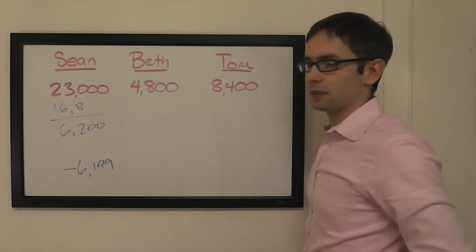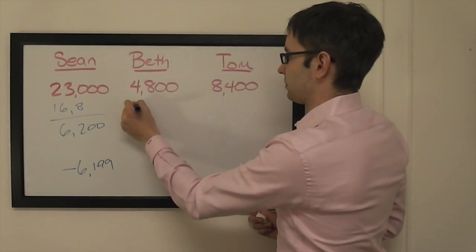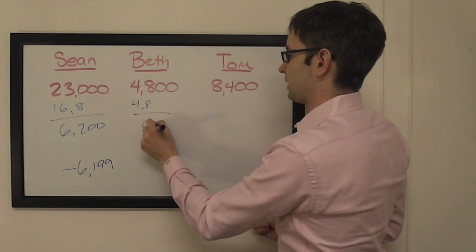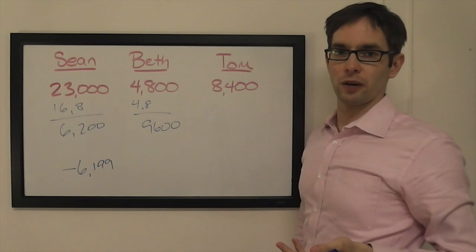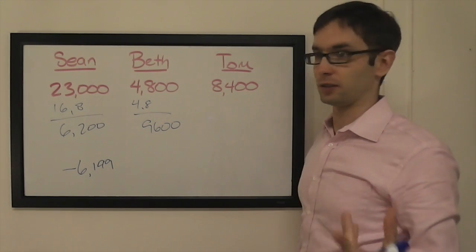Between Beth and Tom, this is also pretty easy. Beth doubles up, she's going to have 9,600, so if I'm Tom, she's going to wager 1,200. If I'm right, Beth can do no better than tie me, which is as good as a win.